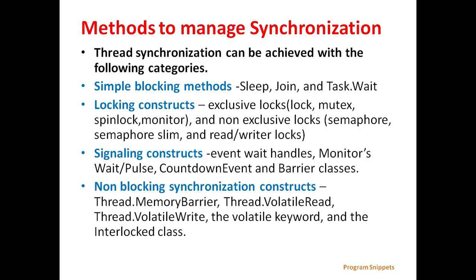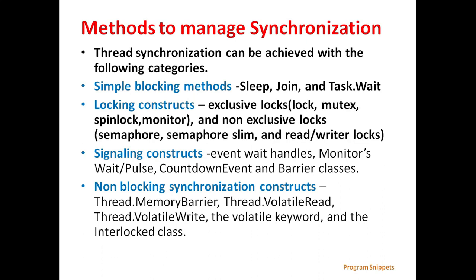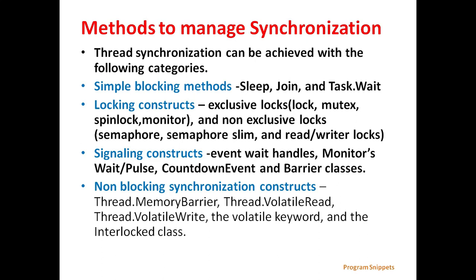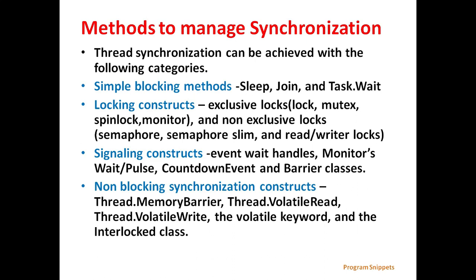Thread synchronization can be achieved with the following categories. First is the simple blocking method, which contains methods: Sleep, Join, and Task.Wait. Then locking constructs, i.e., exclusive locks and non-exclusive locks. Signaling constructs, i.e., event wait handlers, Monitor.Wait or Pulse, CountdownEvent, and Barrier classes. And non-blocking synchronization constructs: Thread.MemoryBarrier, Thread.VolatileRead, Thread.VolatileWrite, the volatile keyword, and the Interlocked class.